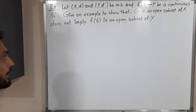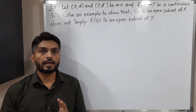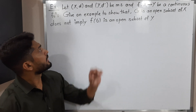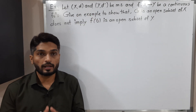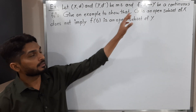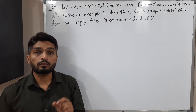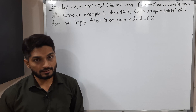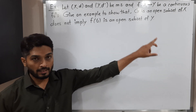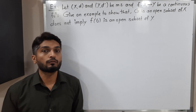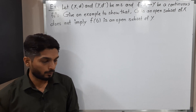Hi everyone. In this video we are going to discuss this example. We have two metric spaces, Xd and Yd-dash, and a function f from X to Y. The given condition is that f is continuous. We have to find an example such that G is open in X, but its image f(G) is not open in Y.